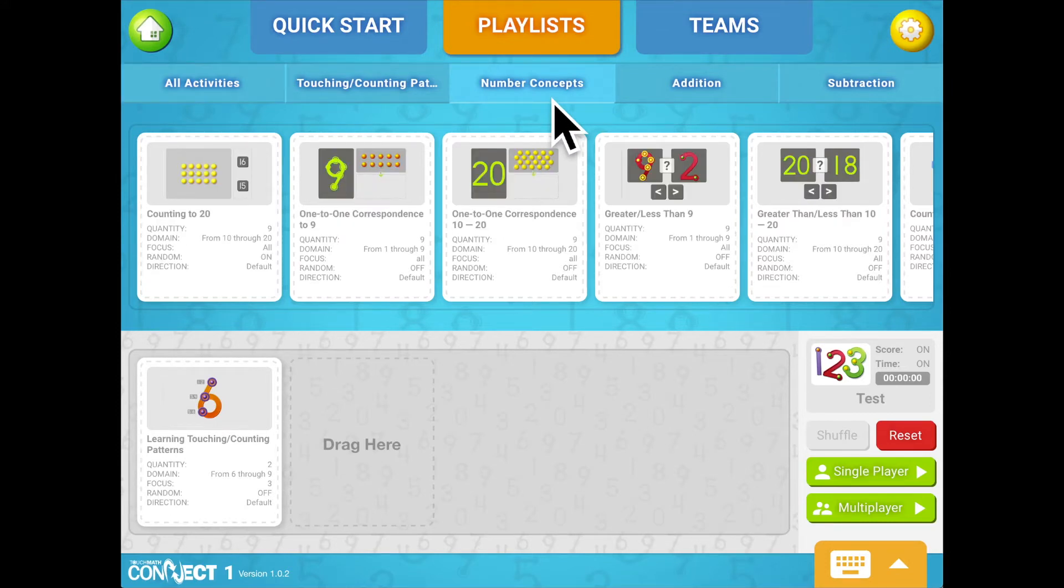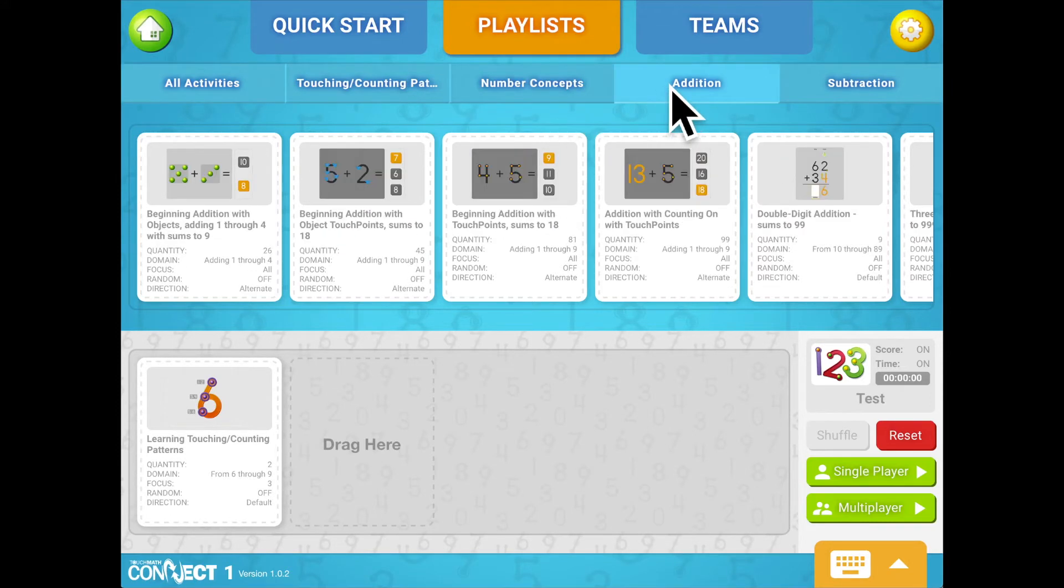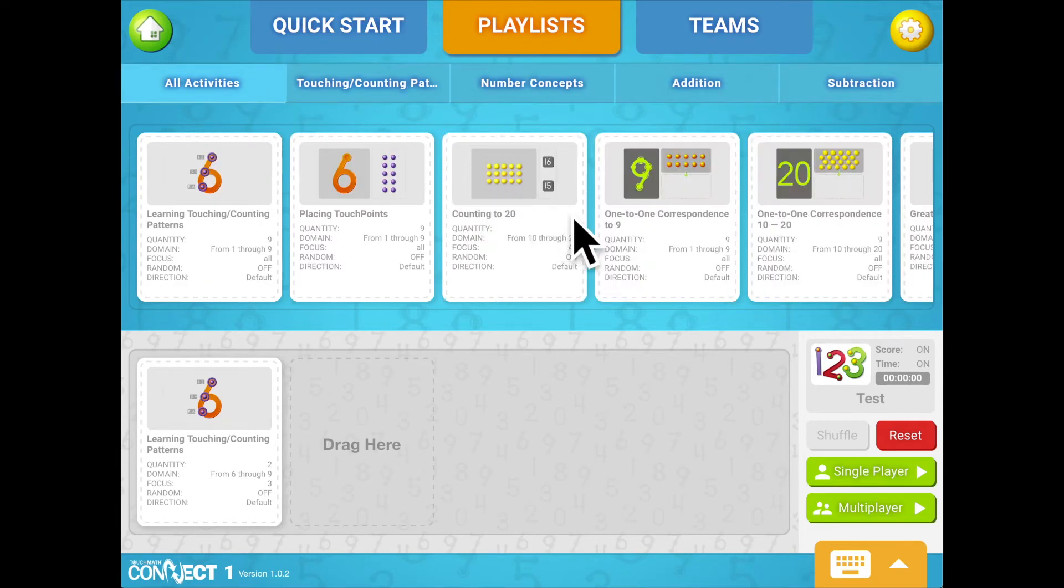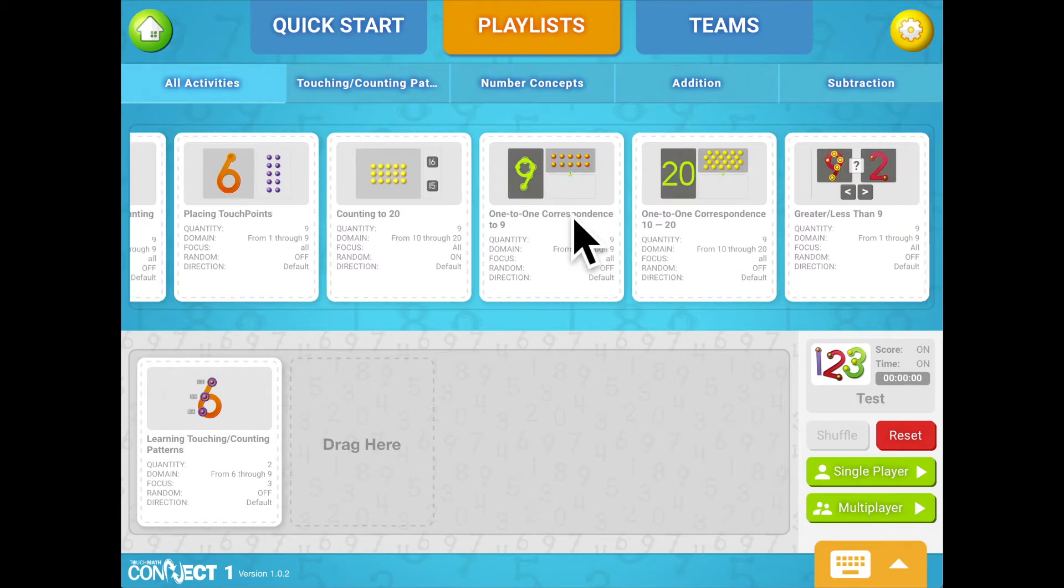Continue adding activity cards to your playlist, customizing each as needed. Use the Skill Selector buttons to sort activities by specific skill, and scroll to the right to view all available activities within each skill.